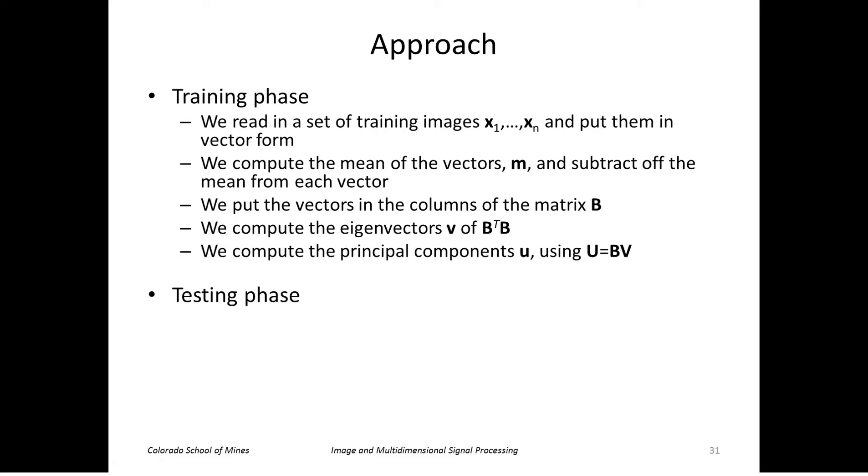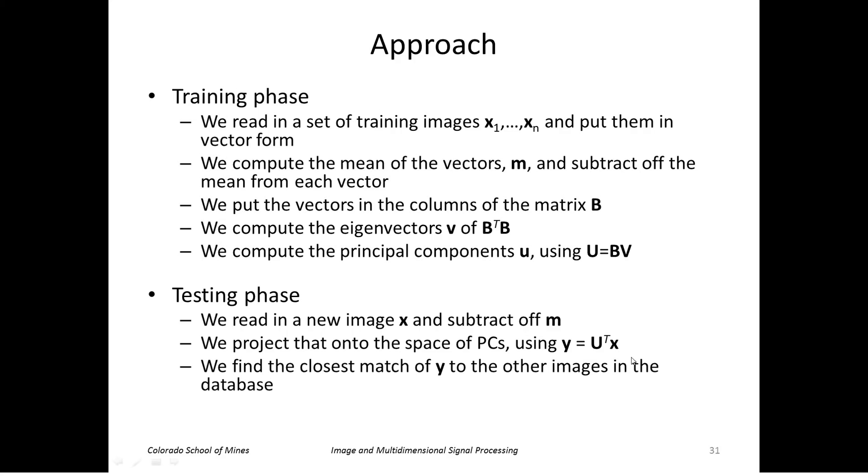And then for a testing phase, we read in a new image x, we subtract off the mean that we computed up here, we project that new image onto the space of principal components by multiplying by the principal components here. We take that set of coefficients y, that vector, and find its closest match to the y's that we got from the training set here.